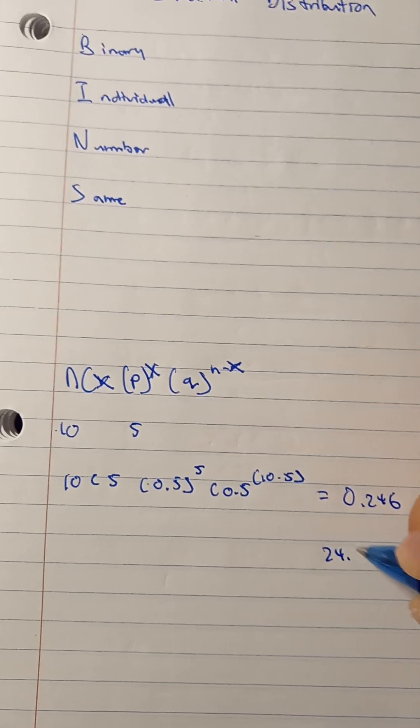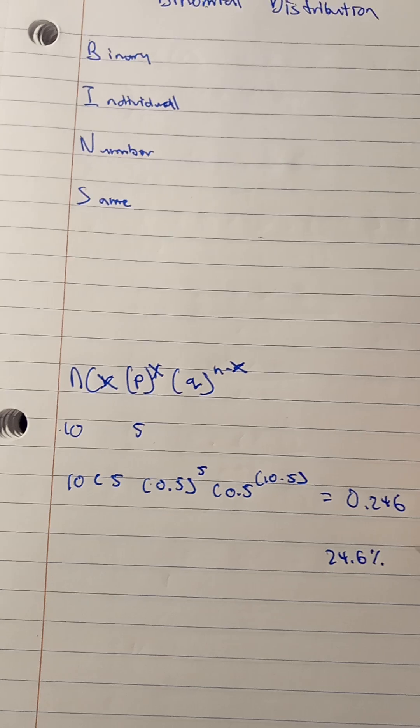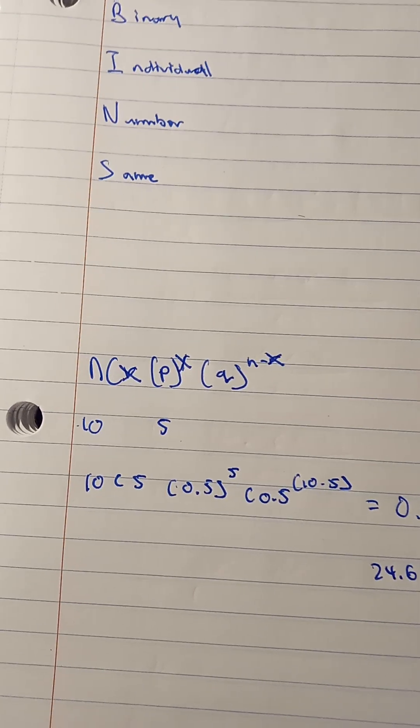It means you have a 24.6% chance of getting 5 out of those 10 coin flips to go in your favor.